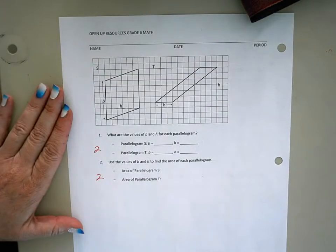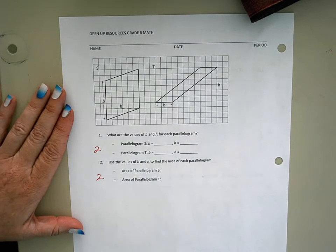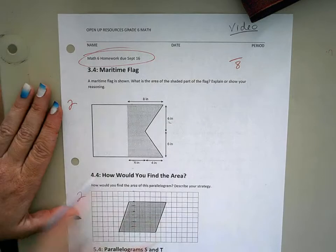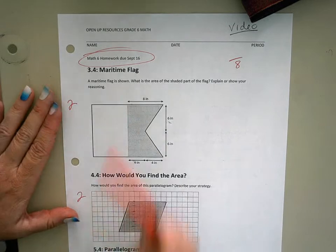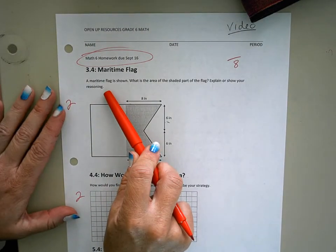I did look into the shoe box for example questions. No one had one today, so I thought let's go ahead and look at this irregular area and figure it out together. A maritime flag is shown.